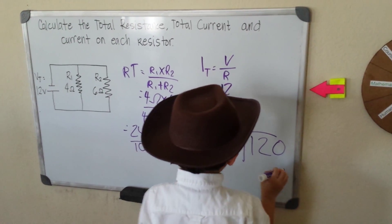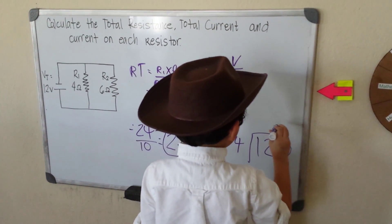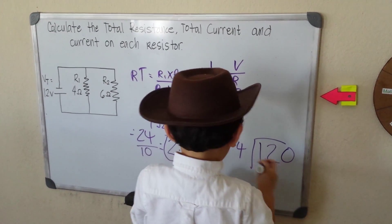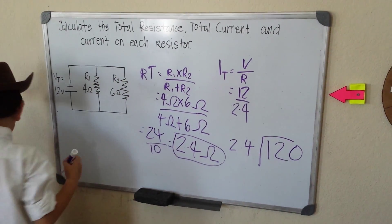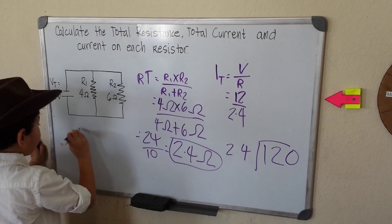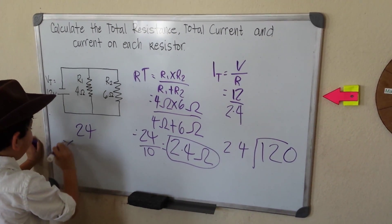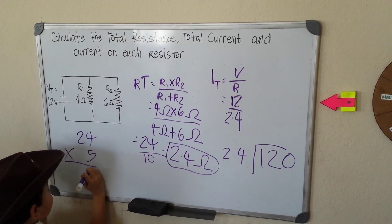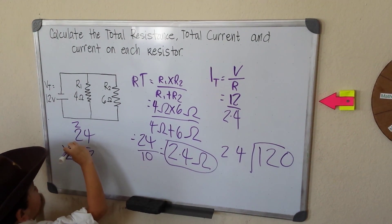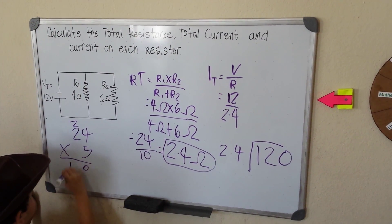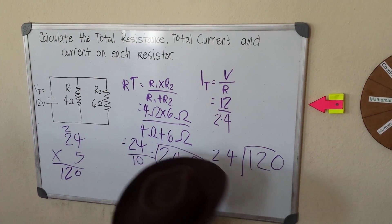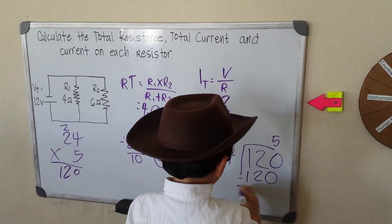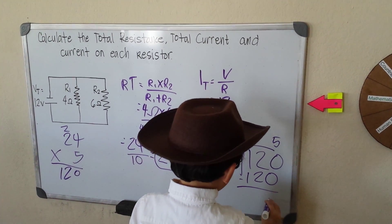So 120 divided by 24. That would be, let's see. 24 times 5. 5 times 4 is 20, carry 2. 5 times 2 is 10 plus 2 is 12. 120, so that would be 5. 5 times 24 is 120.